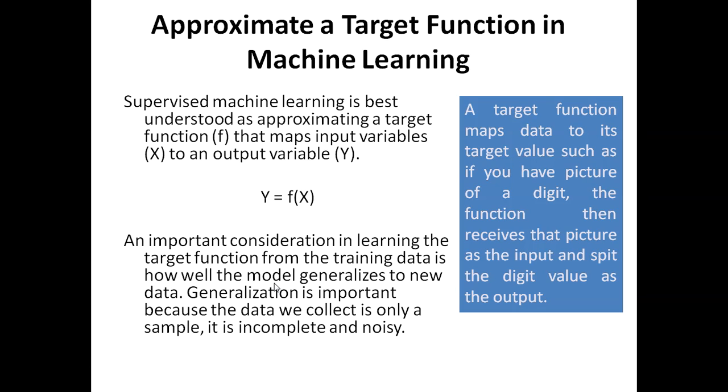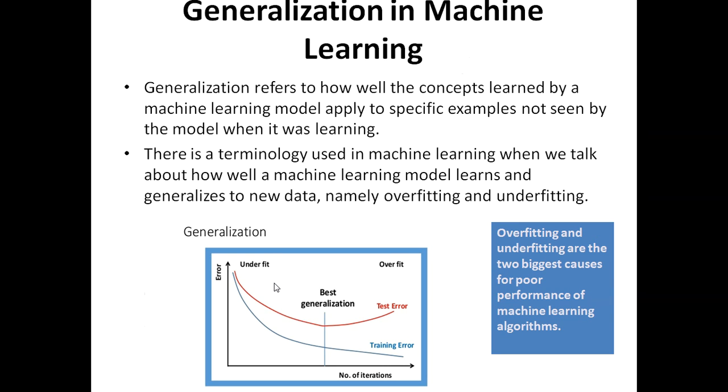We are just training the machine on sample data. It is incomplete and noisy, and when we are working with the original data, it will be huge. The machine should give the result in a more precise way. If you are talking about generalization in machine learning...